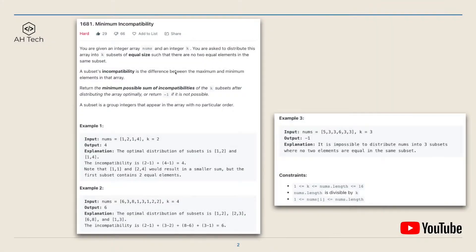The question statement: we are given an integer array nums and an integer k, and we have to distribute this array into k subsets of equal size such that there are no equal elements in the same subset.